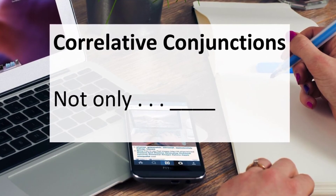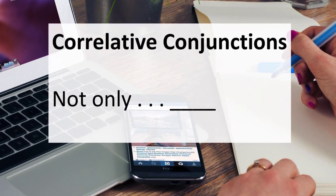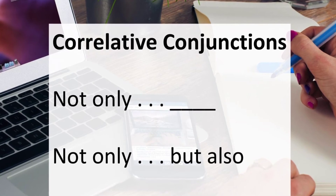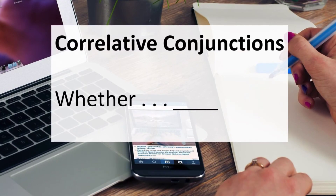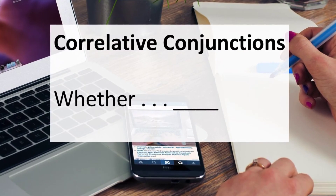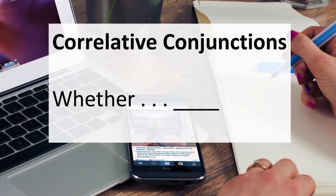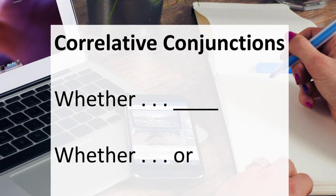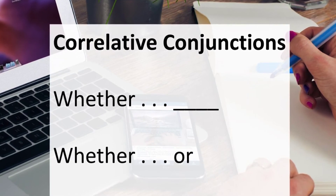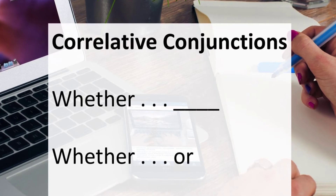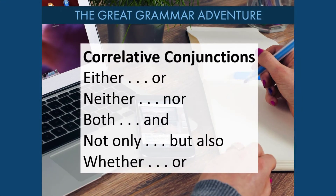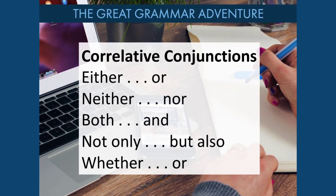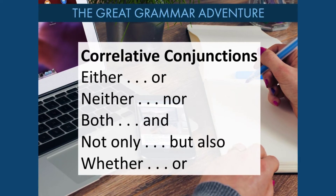If you're using the phrase not only, you'd likely also see but also in that same sentence. If you're using the word whether, you'll likely also be using the word or later in that same sentence. Common correlative conjunctions include either/or, neither/nor, both/and, whether/or, and more.